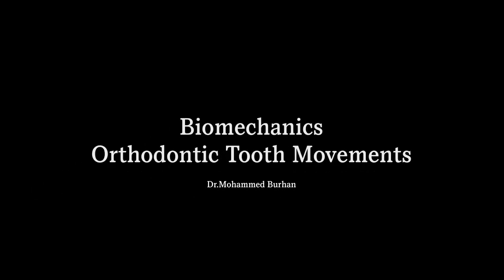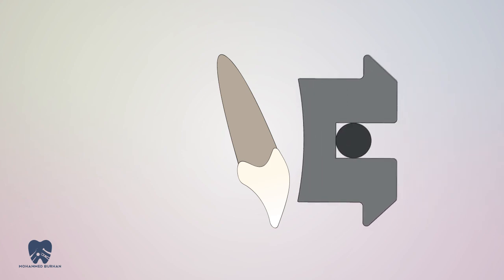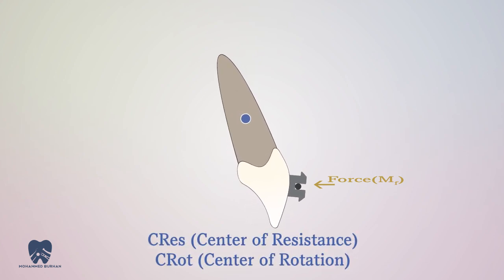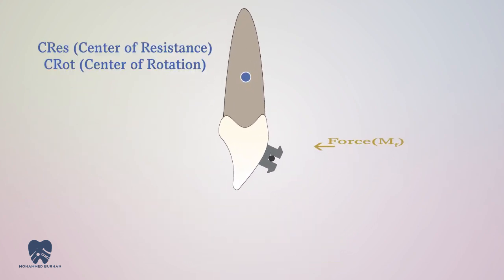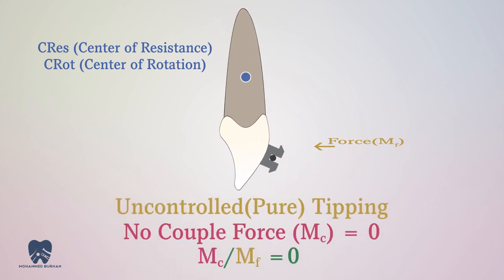Orthodontic tooth movements. Round wire inserted into the bracket slot and then force applied. The tooth moves around the center of rotation which is close to the center of resistance. This is called uncontrolled tipping. There is no moment of couple in this situation.